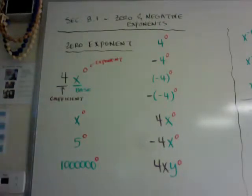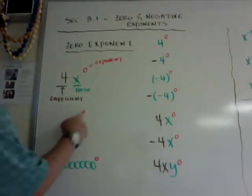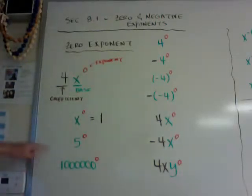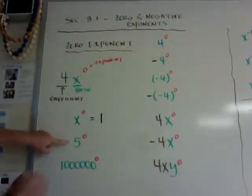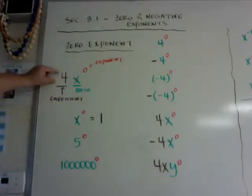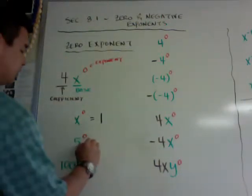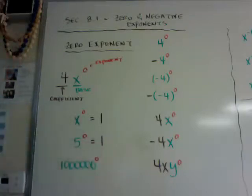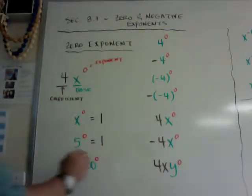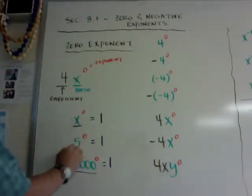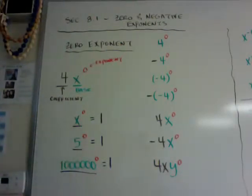So x to the zero — this is your base to the zero — that equals 1. A number can also go to the zero, so if 5 is my base, 5 to the zero is also 1. And if I have a million to the zero, that's also 1 because the whole thing is your base to the zero power. This is your base, and this is your base.